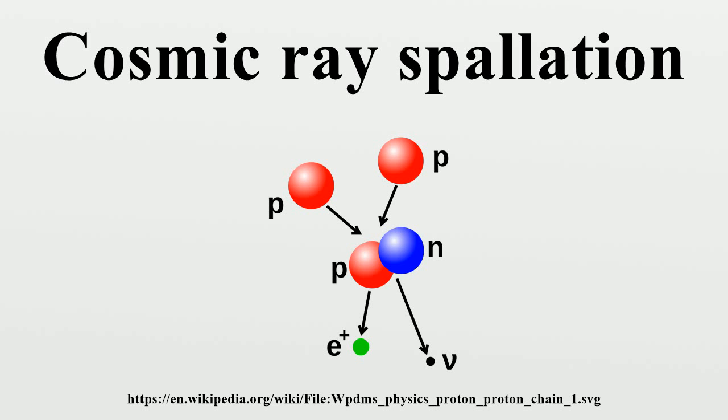Cosmic ray spallation is thought to be responsible for the abundance in the universe of some light elements such as lithium, beryllium, and boron. This process was discovered somewhat by accident during the 1970s.